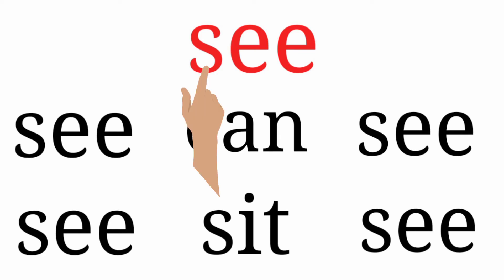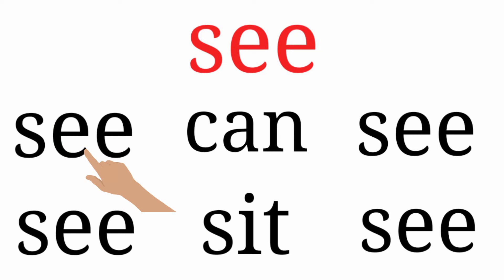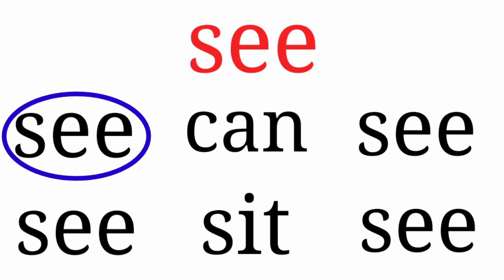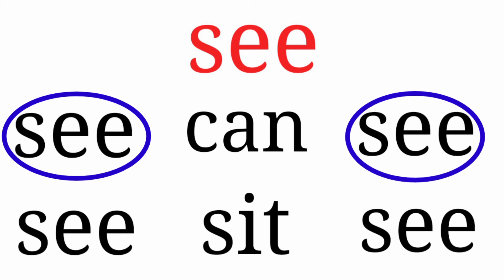Look at the next word. It is S-E-E-C. The words are same, so we are going to circle it. Next, C-A-N — 'can' — which is different. Next, S-E-E-C — which is same, so we are going to circle it. The next one also — same — S-E-E-C, so we are going to circle it.